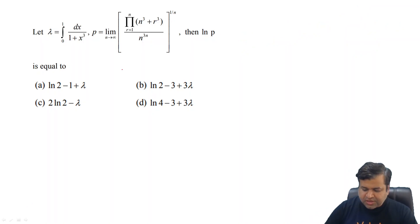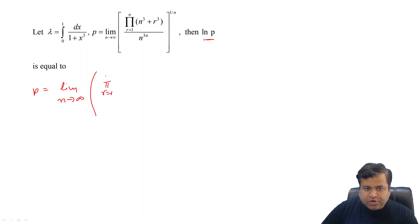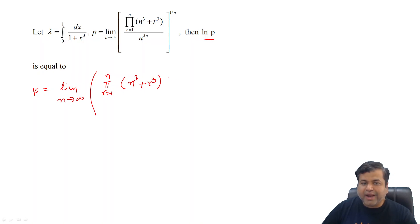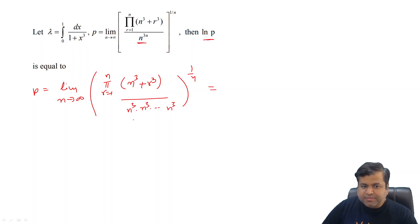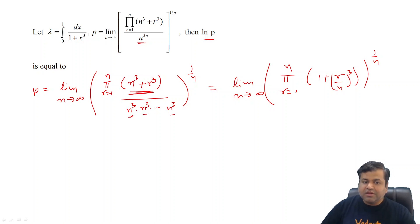Now, before taking log, let's rewrite p as the limit as n tends to infinity of the product of r equal to 1 to n. There are basically n terms: the first term is n³ + 1³, the second term is n³ + 2³, and so on, up to n³ + n³. So the denominator n to the power 3n gets distributed — you can factor out n³ from each of the n terms.